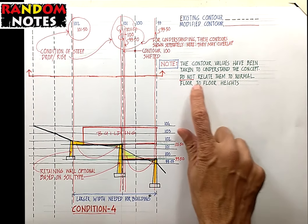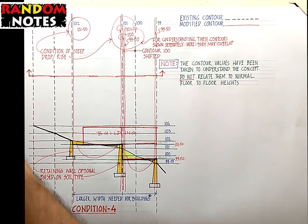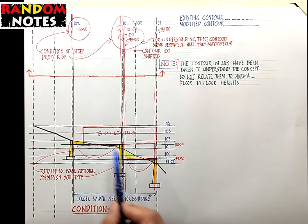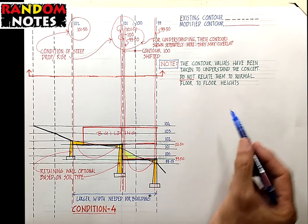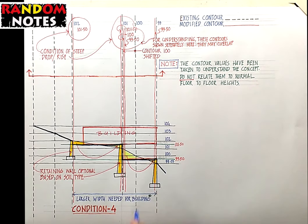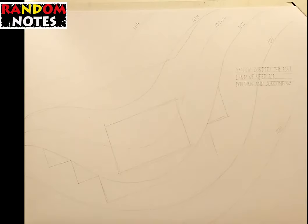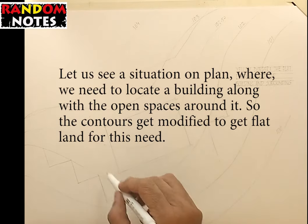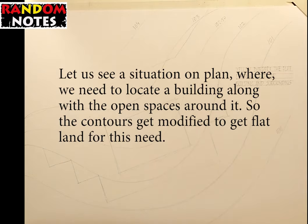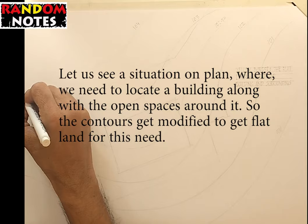Please note that the contour values have been taken to understand the concept — please do not relate them to normal floor-to-floor heights. Finally, we will do a similar exercise only in plan, where the contours are not straight. We will locate a building, identify the edge of flat land needed for the building and its surroundings, and work out the modified contours on plan.